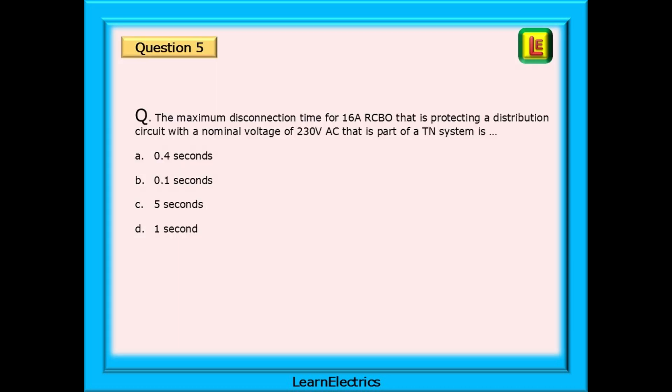Next, question 5, about disconnection times. The maximum disconnection time for a 16 amp RCBO that is protecting a distribution circuit with a nominal voltage of 230 volts AC that is part of a TN system is what?